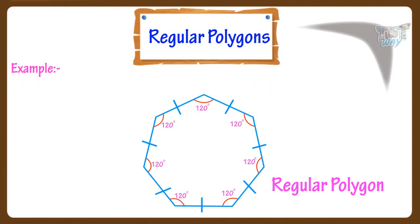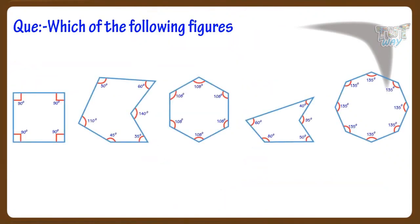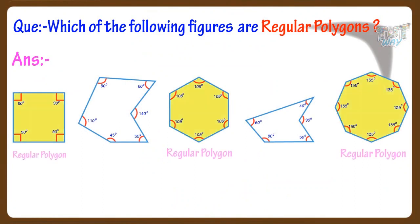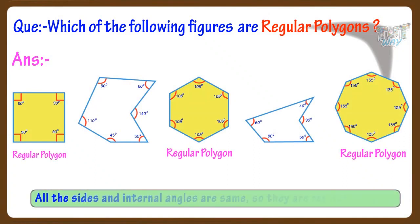All the sides and angles are the same in this figure, so this is a regular polygon. Now which of the following figures are regular polygons? These figures are regular polygons, as they have all sides and angles the same.